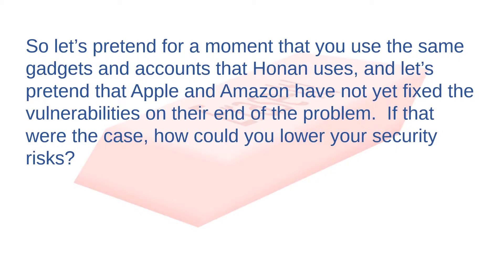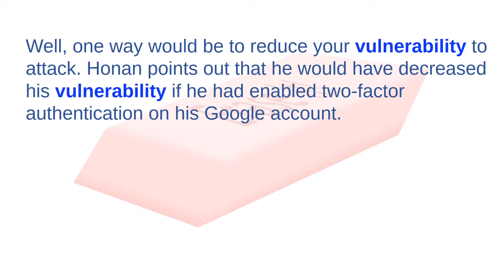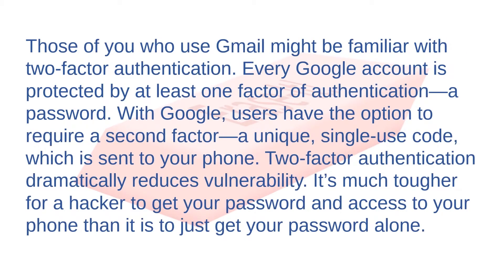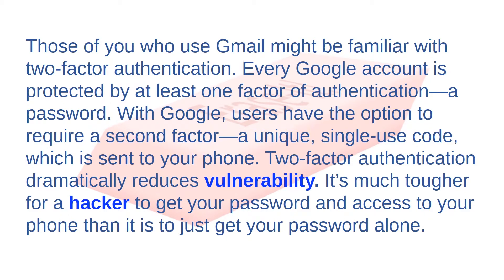Let's pretend you use the same gadgets and accounts that Honan uses, and that Apple and Amazon have not yet fixed their vulnerabilities. How could you lower your security risks? One way would be to reduce your vulnerability to attack. Honan points out that he would have decreased his vulnerability if he had enabled two-factor authentication on his Google account. Every Google account is protected by at least one factor — a password — but users can require a second factor: a unique single-use code sent to your phone. Two-factor authentication is much tougher for a hacker to defeat than a password alone.